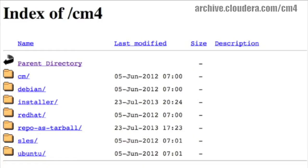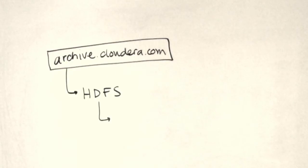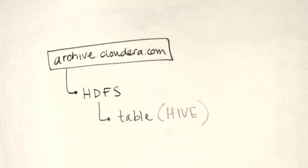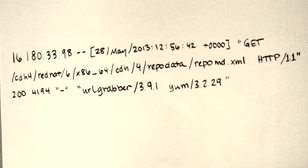Archive.cloudera.com is the URL which hosts all downloads of CDH and CM. The logs which track the downloads of CDH and CM are stored on Archive. Flume moves these raw logs to HDFS. We take these raw logs and parse them into a query-friendly format for easy extraction of data. I used Python scripts in Hive to do this; John used Java and Impala, and we went with his method.